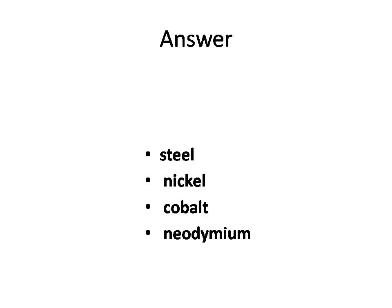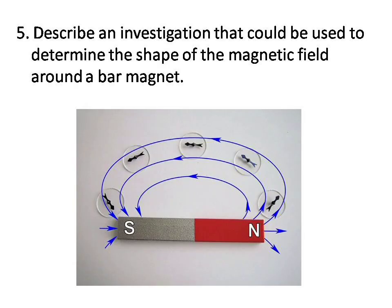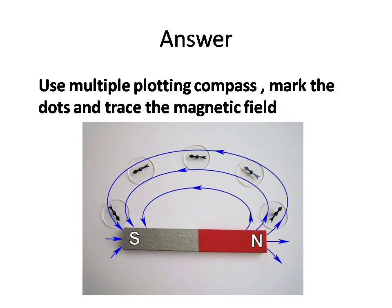Question number five. Describe an investigation that could be used to determine the shape of the magnetic field around a bar magnet. Answer: we need to use multiple plotting compasses, mark the dots, and trace the magnetic field.